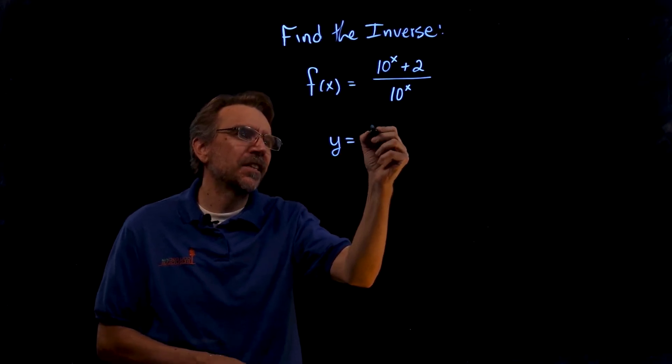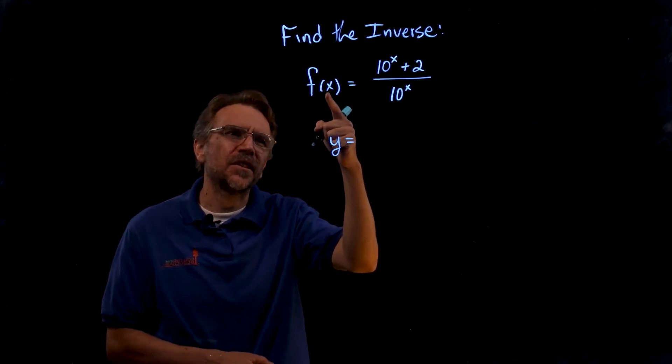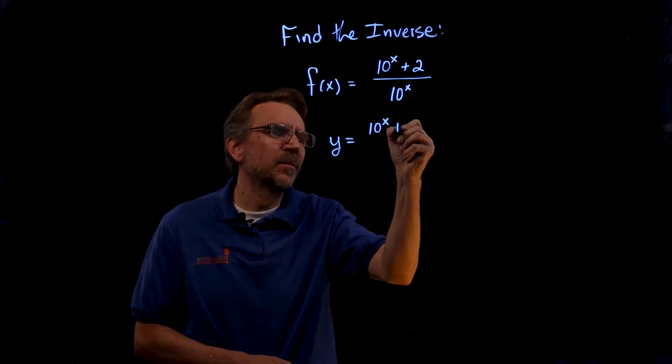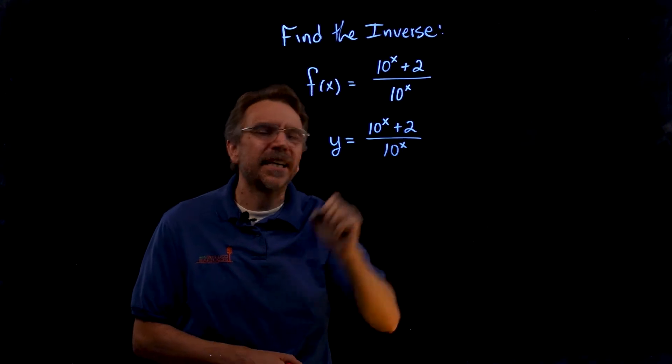The first step in finding the inverse is to get rid of the function notation. So let's replace that with y, and then we'll have y equals 10 to the x power plus 2 over 10 to the x.